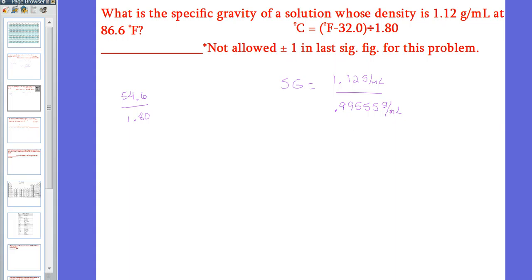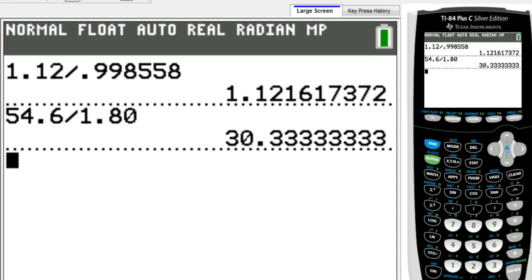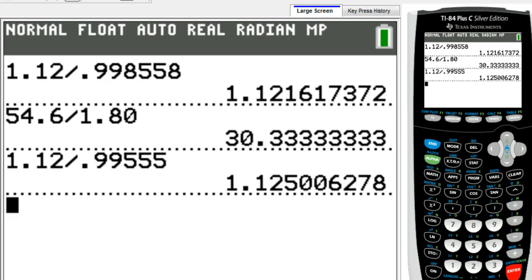So now we need to find out our specific gravity. 1.12 divided by 0.99555, and now we have a number 1.125006. So we're going to have a specific gravity of 1.13 because there are numbers after the five and it won't matter because there are numbers after the five, so it's going to round up.